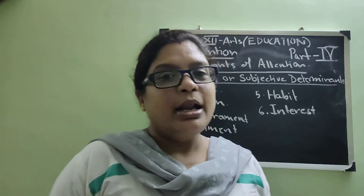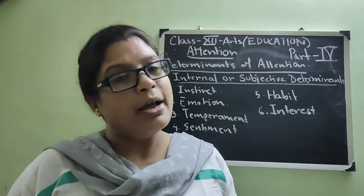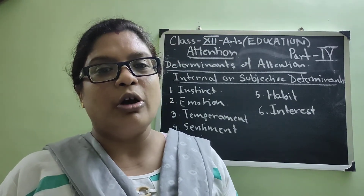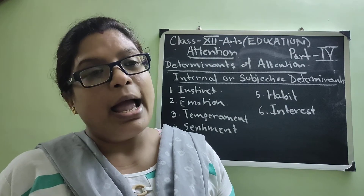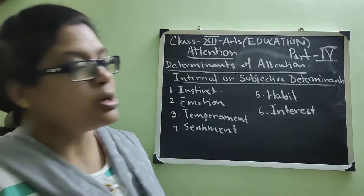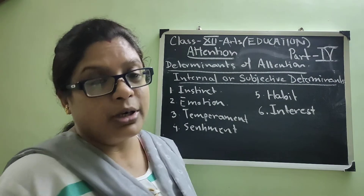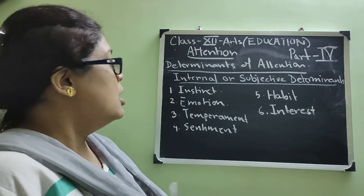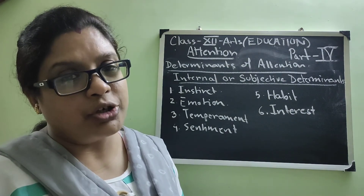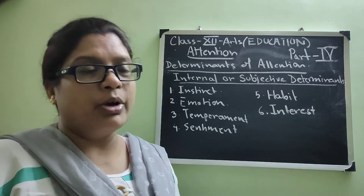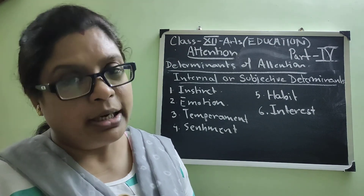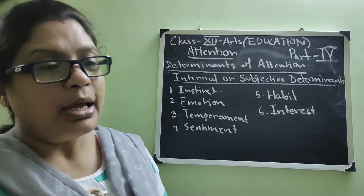The last point is interest. Interest and attention are highly related — a person who has interest in a particular topic will definitely pay attention, and if you pay attention you will develop interest directly. So these are the six points of the internal or subjective determinants of attention. Next day we will discuss the educational influence of attention in learning — how attention influences learning. Thank you.